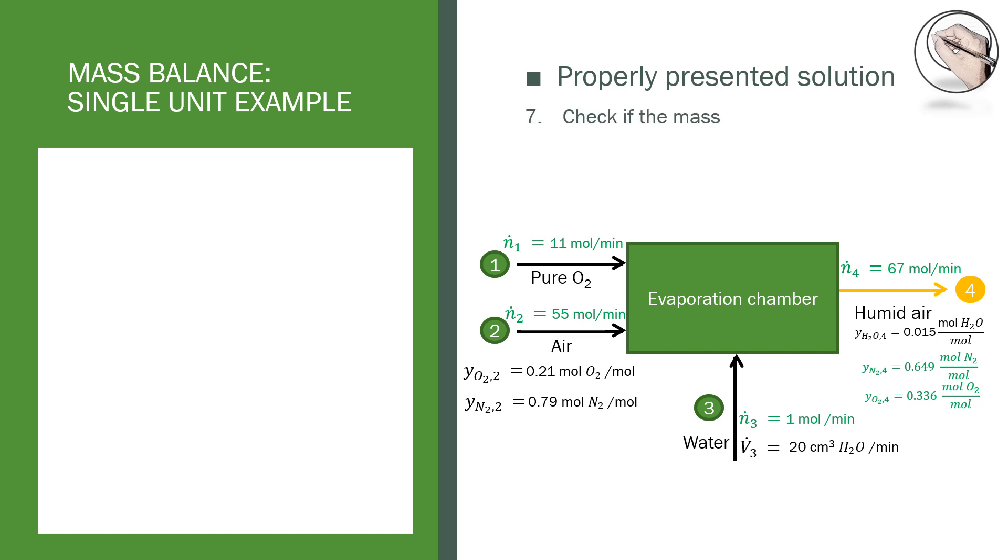The last step is to double-check your mass balance. We are going to use the oxygen balance to do so. We know the two input streams of oxygen and the molar flow rate of stream 4, so we can calculate the molar composition of oxygen in stream 4 to see if it matches the value calculated previously.